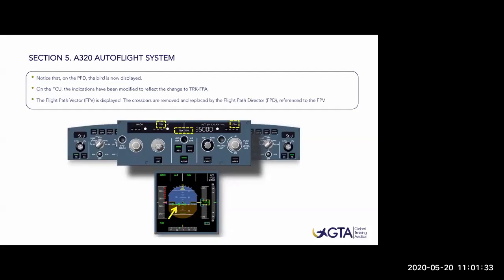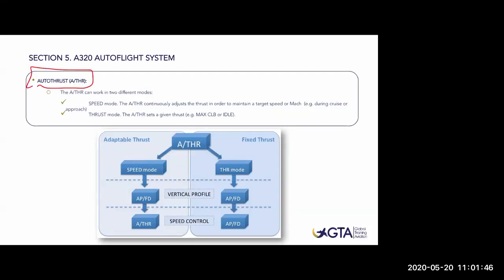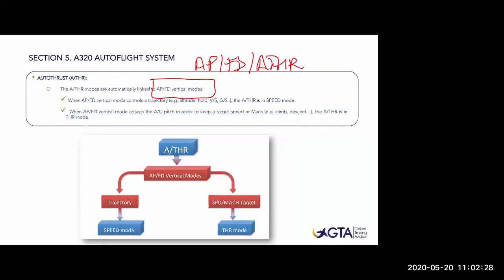Now the autothrust. Autothrust is a very nice system with different modes. It can work in two different modes: speed mode, where the autothrust continuously adjusts thrust to maintain a target speed or Mach number; and thrust mode, where the autothrust sets a given thrust level. Thrust mode is associated with climb or descent - the aircraft selects either full available power for climbing or minimum power for descending.